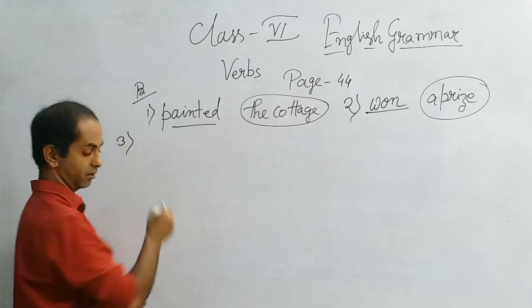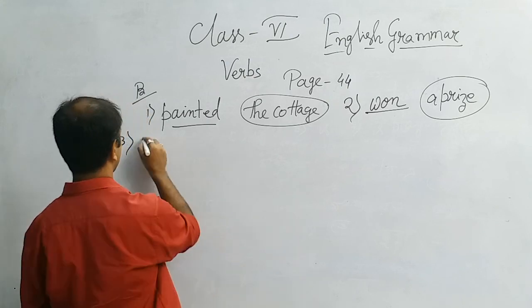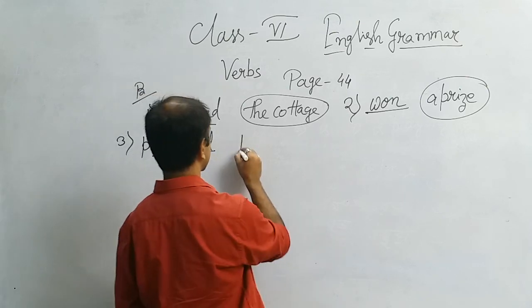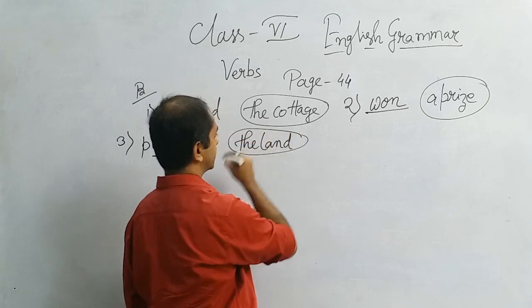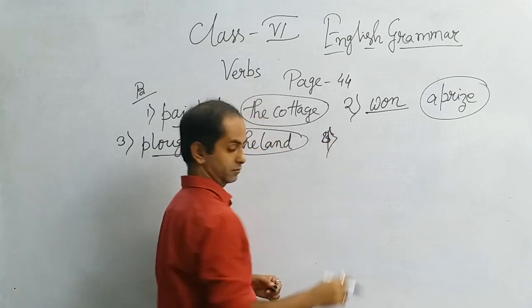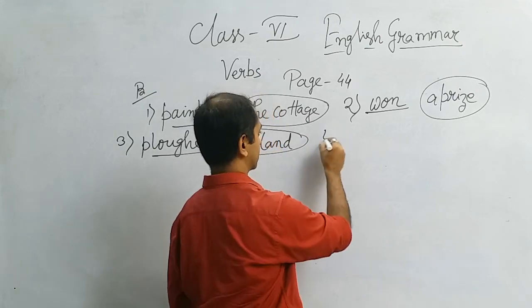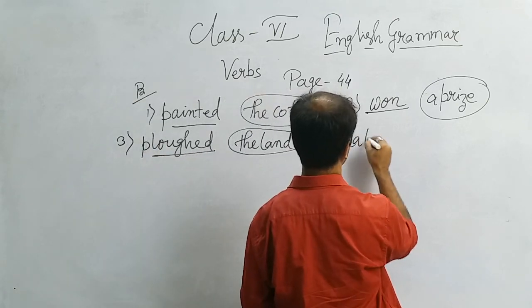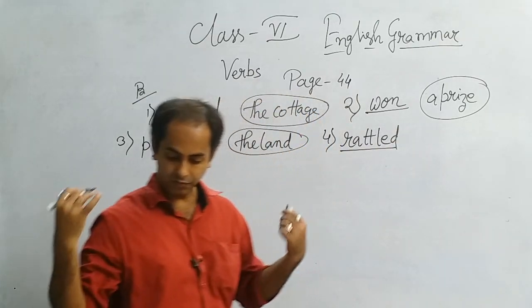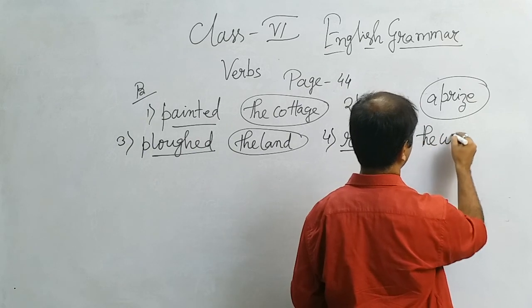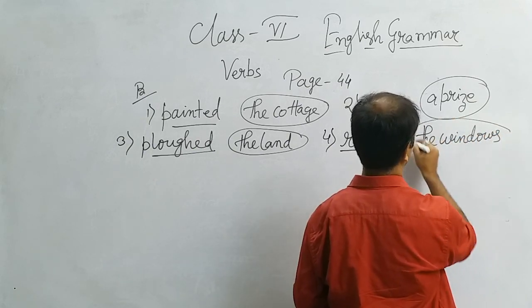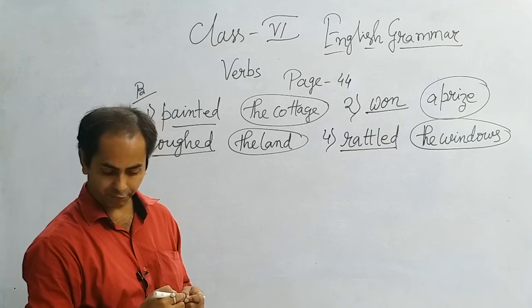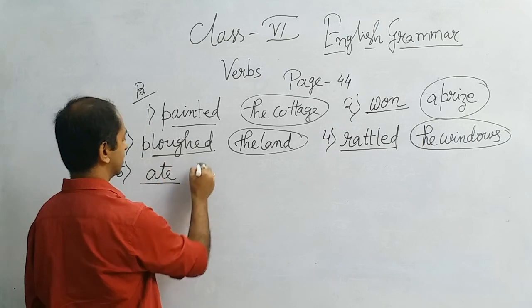Number 3: The farmer ploughed the land. Ploughed is the verb, ploughed what, the land is the object. Number 4: The strong wind rattled the windows. Rattled is the verb, rattled what, the windows. Number 5: The cat ate the fish. The cat ate what, the fish.